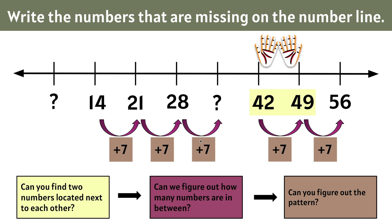And 28 plus 7 more would be 8 and 7 is 15, carry our 1, so we have 35. 35 plus 7 more equals 42.